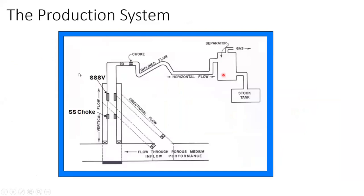Our production system starts from the reservoir, where our hydrocarbon is. The hydrocarbon flows from the reservoir to the wellbore, from the wellbore to the surface and into the separator. So it starts from the upstream level and is moving gradually downstream. For this hydrocarbon to move from the reservoir into the wellbore, it has to overcome some resistive forces in which energy is lost. This loss in energy leads to changes in pressure.